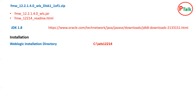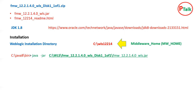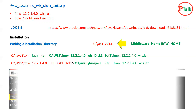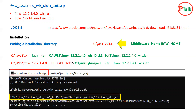For installation on my machine, I have created a directory named wls12214 inside the C drive, which is also called the Middleware Home. To initiate the installer using java -jar, you have two options: you can go inside your Java bin directory and run java -jar with the complete path of your jar installer, or you can go directly to the installer directory and run java -jar with the complete path of your Java.